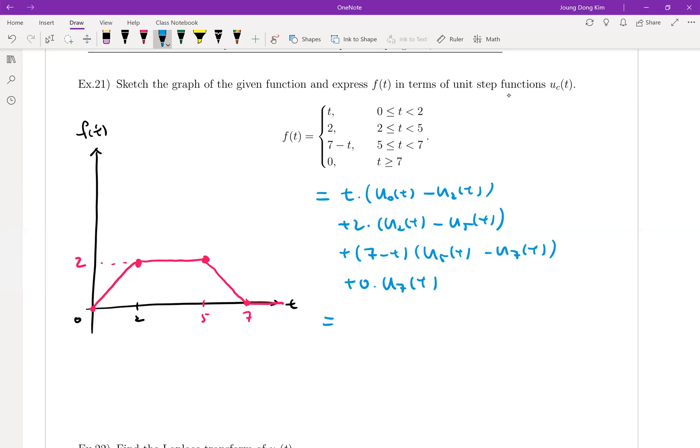It's equal to t minus tU_2(t) plus 2U_2(t) minus 2U_5(t) and plus 7 minus t times U_5(t) minus 7 minus t times U_7(t), then 0. That's okay. Then it is equal to t, and let me write it.